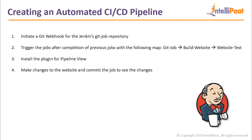The first step would be to initiate a git webhook for the Jenkins git job repository. So basically, whatever changes I'm making to git, that change should trigger the git job repository. So let's see how we can do that.